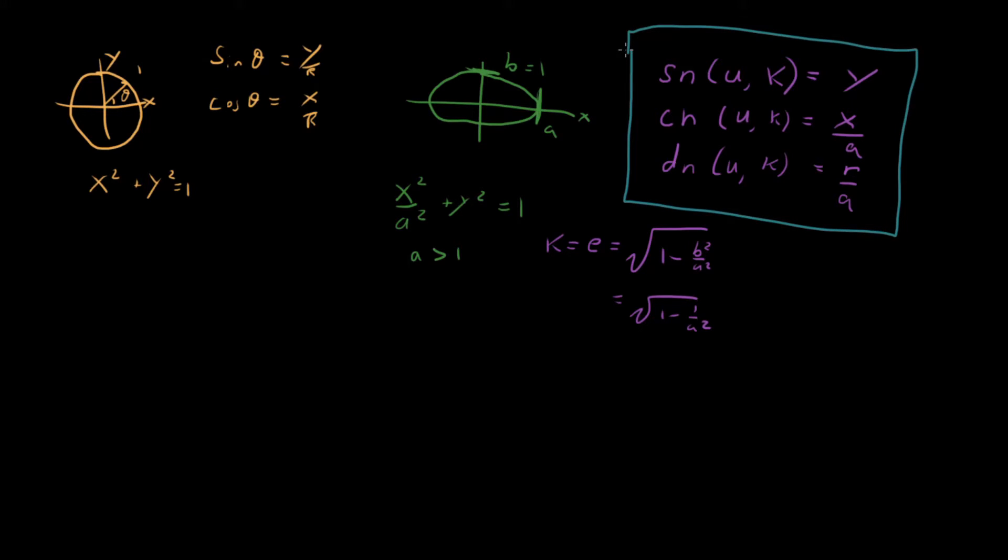But let's get back to a question I raised earlier, which is what is this u right here? What is the generalization of this data that makes sense and is the most useful for elliptical functions?